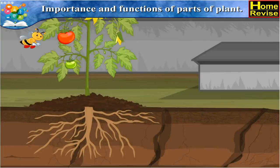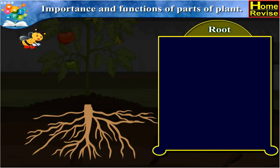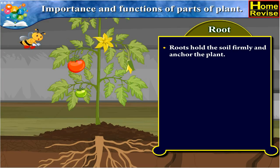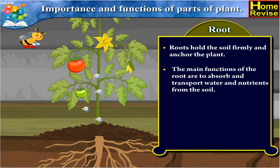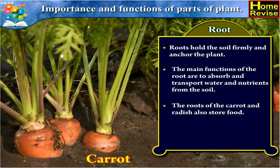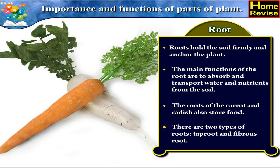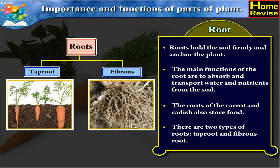The fifth part of the plant is the root. Roots hold the soil firmly and anchor the plant. The main functions of the root are to absorb and transport water and nutrients from the soil. The roots of the carrot and radish also store food. There are two types of roots: tap root and fibrous root.